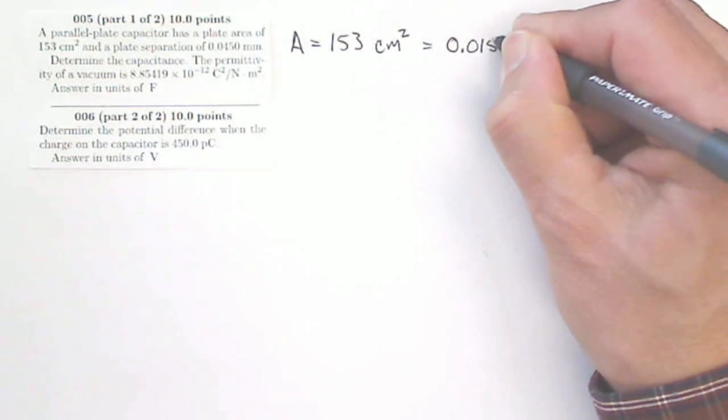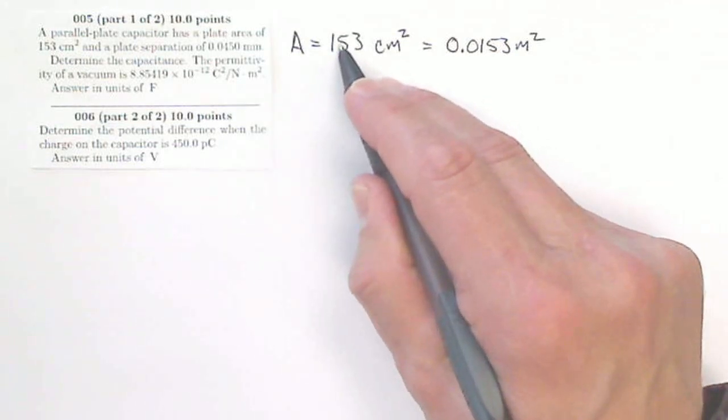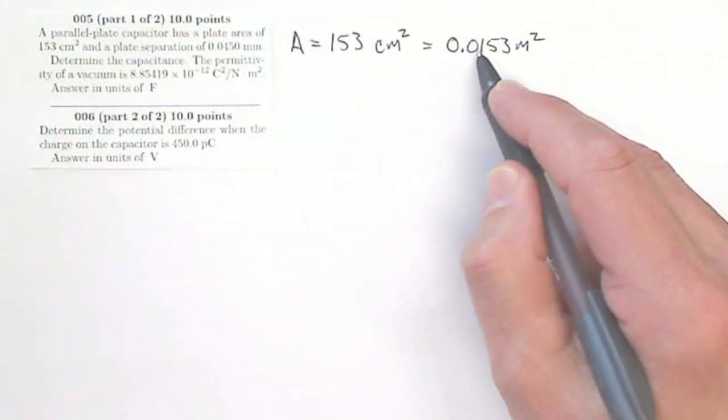So it's 0.0153 meters squared, because I'm dividing by 100 and dividing by another 100, and that'll give me my 0.0153.